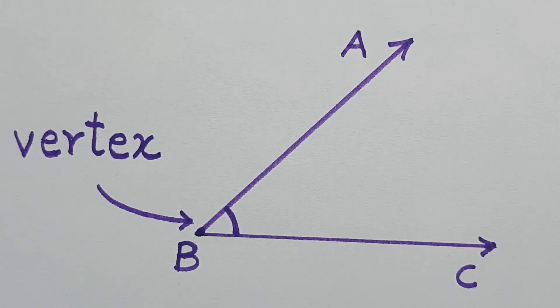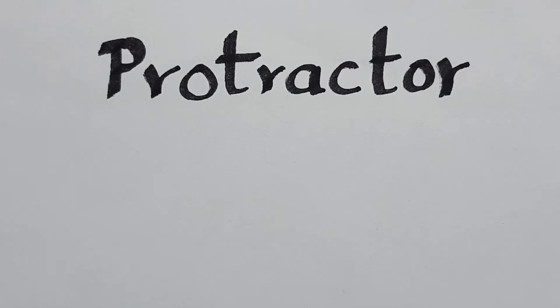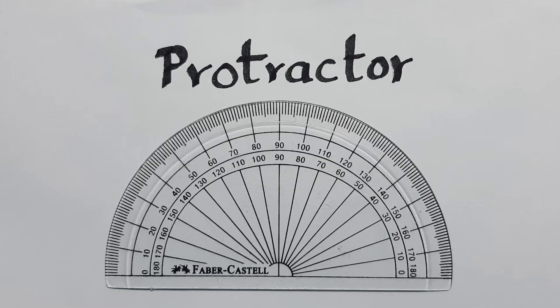Now, let us see the instrument which is called a protractor. Students, kindly note the spelling of the word protractor: P-R-O-T-R-A-C-T-O-R, protractor. You can easily find this protractor in your geometry box. This protractor can be used to measure and to draw the angles.